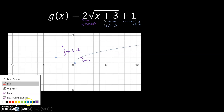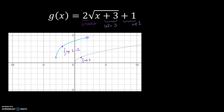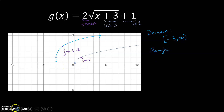When I sketch the curve, I just want to make sure I'm mimicking the shape of the parent. For this new curve, the domain is going to be from negative three to infinity, because the furthest left-hand point is at negative three. The range is going to be from the y-coordinate of the lowest point, which is one, so the range is from one to infinity.